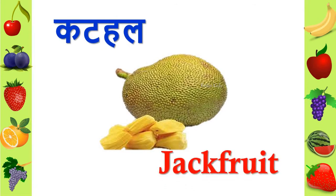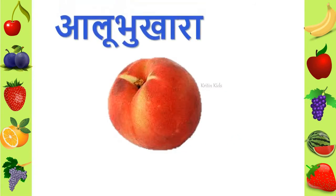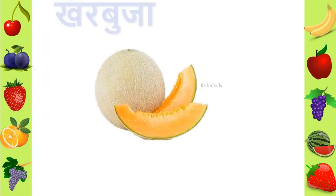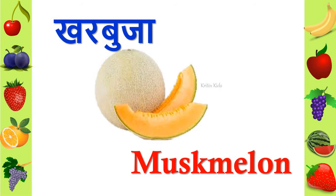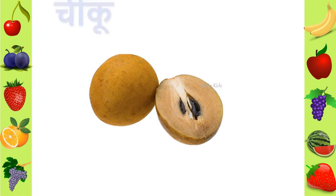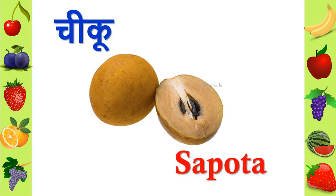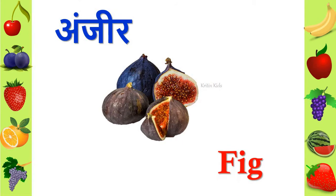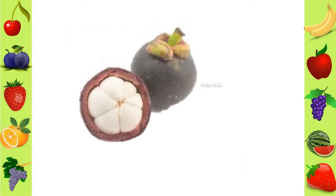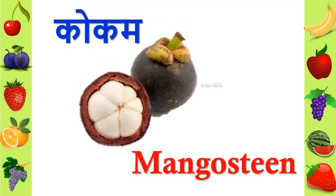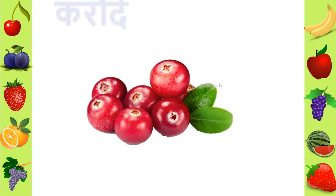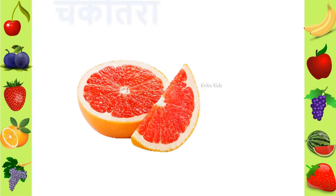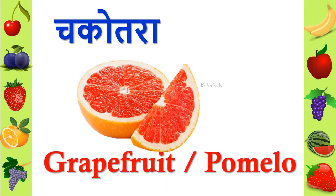We call it nashpati in Hindi and in English we call it pear. We call it kharbooja and in English we call it musk melon. We call it chikku and in English we call it sapota. We call it kokum and in English we call it mangosteen. We call it karamda in Hindi and in English we call it cranberry. We call it chakotra and in English we call it grapefruit.